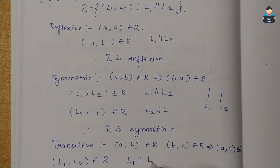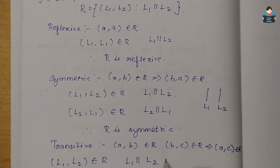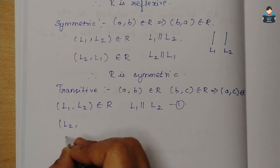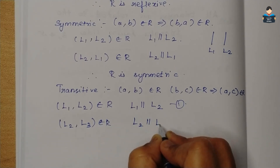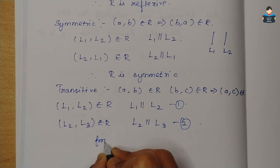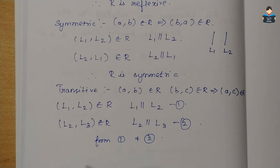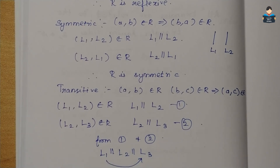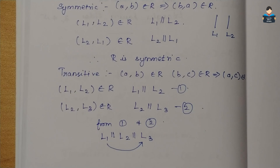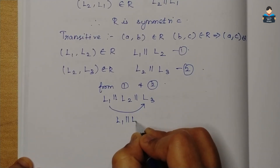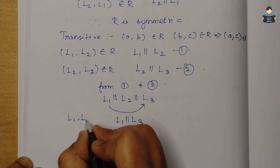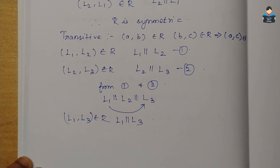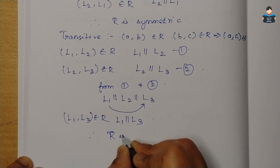L1 is parallel to L2 — this is equation 1. L2 is parallel to L3 — this is equation 2. From equations 1 and 2: since L1 is parallel to L2 and L2 is parallel to L3, we can conclude that L1 is parallel to L3. Therefore (L1, L3) belongs to R, and so R is transitive.